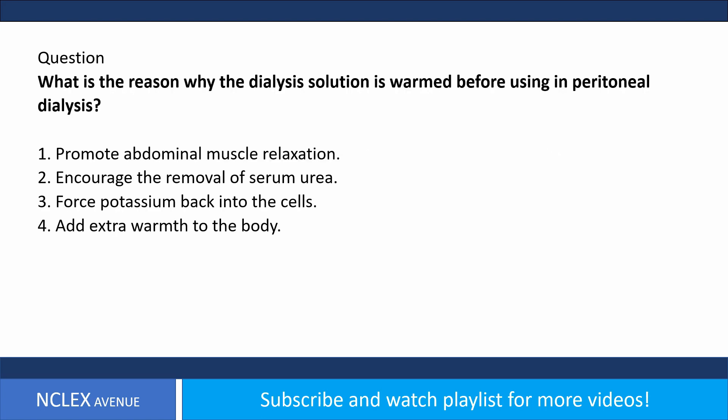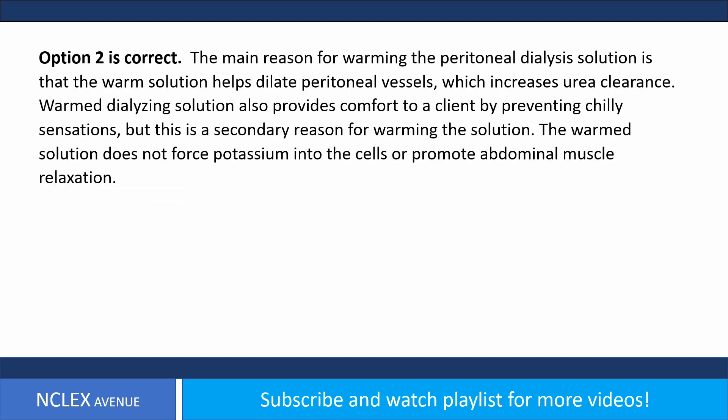What is the reason why the dialysis solution is warmed before use in peritoneal dialysis? One, promote abdominal muscle relaxation; two, encourage the removal of serum urea; three, force potassium back into the cells; four, add extra warmth to the body. Answer: option two is correct. The main reason for warming the peritoneal dialysis solution is that the warm solution helps dilate peritoneal vessels, which increases urea clearance.